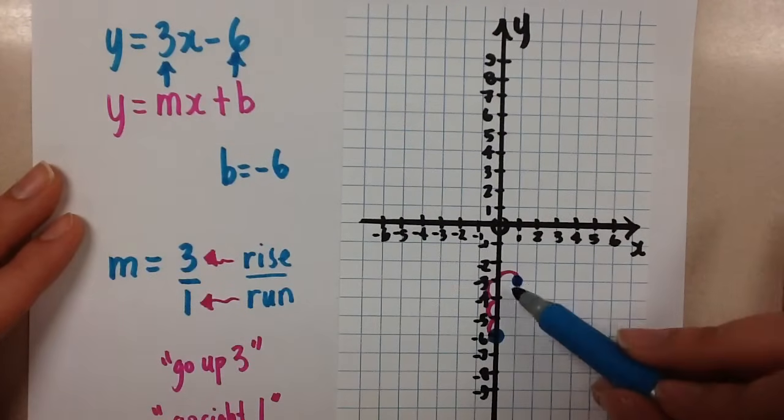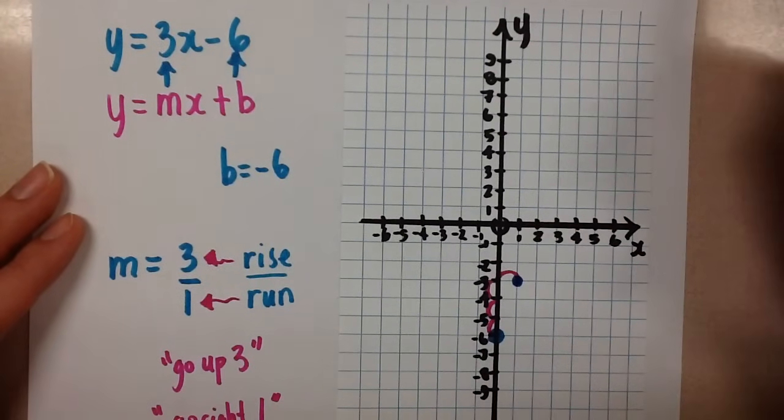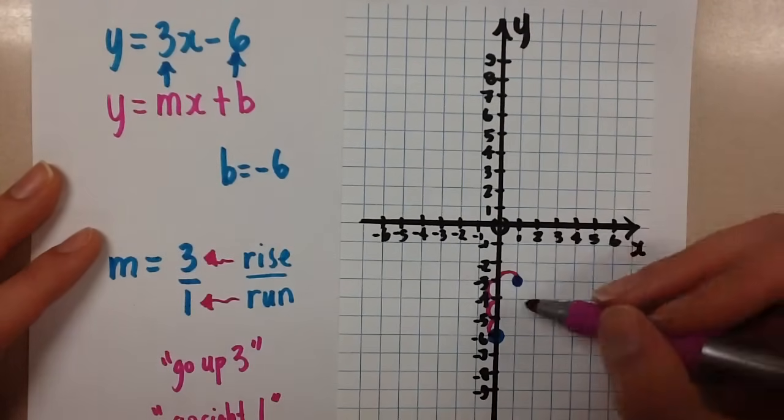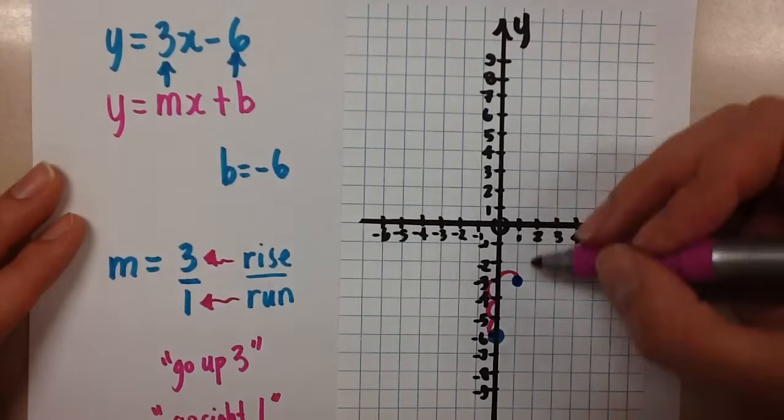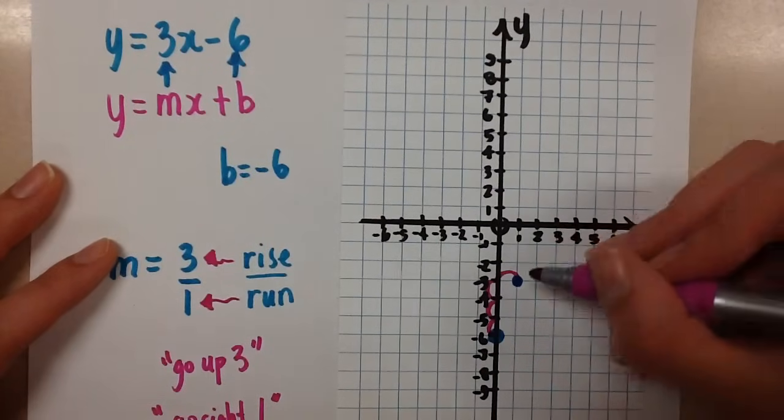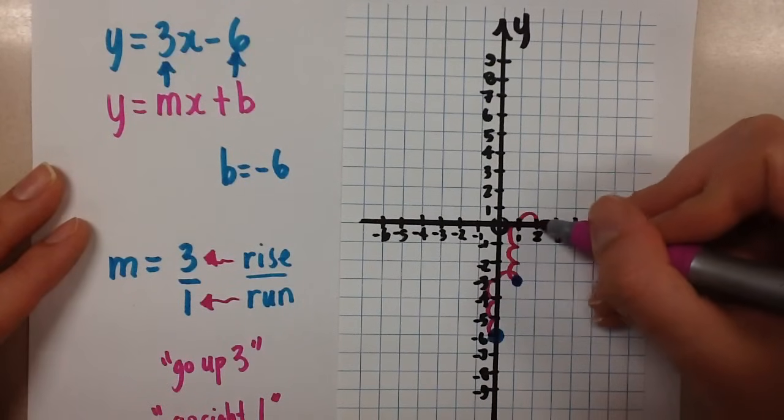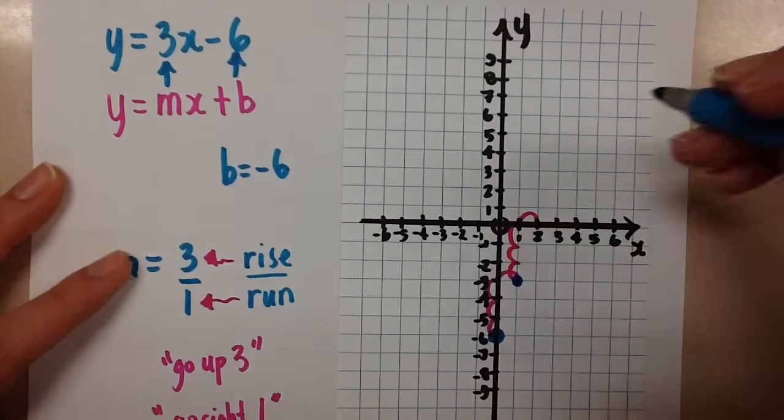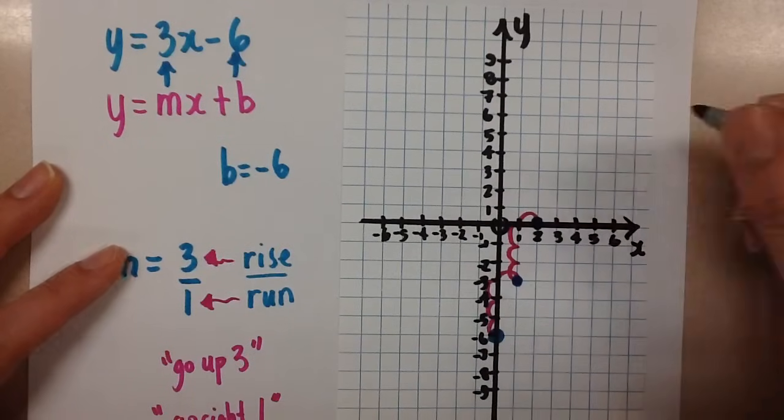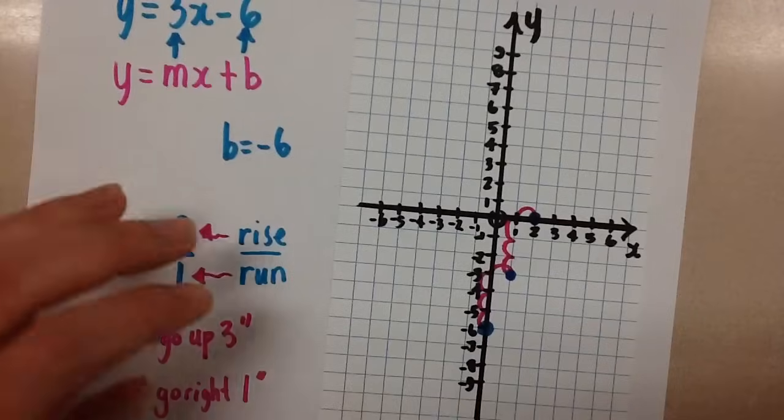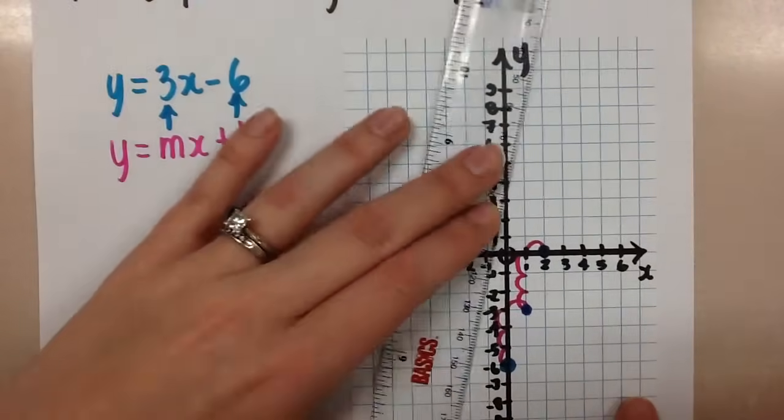So now we have 2 points. We can draw a line through those 2 points. And that's the line for this equation. I can also keep going with my slope. If I want more points, again, I would go up 3: 1, 2, 3, and right 1. And right there would be another point. I can keep doing this until I get as many points as I want. But really, you only need 2 points to draw a line.